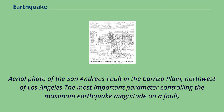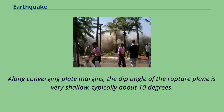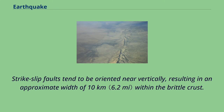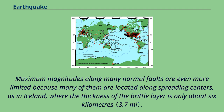The most important parameter controlling the maximum earthquake magnitude on a fault is not the maximum available length, but the available width, because the latter varies by a factor of 20. Along converging plate margins, the dip angle of the rupture plane is very shallow — typically about 10 degrees — thus the width of the plane within the top brittle crust can become 50 to 100 kilometers, making the most powerful earthquakes possible. Strike-slip faults tend to be oriented near vertically, resulting in an approximate width of 10 kilometers within the brittle crust, so earthquakes with magnitudes much larger than 8 are not possible.